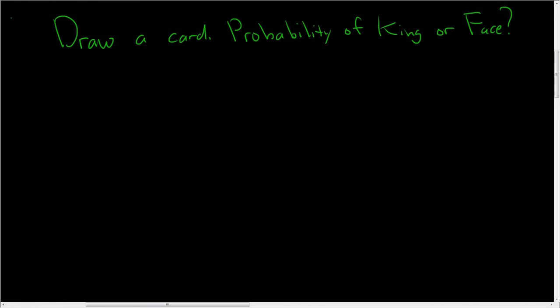Okay, so a single card will be selected from a deck, and we want the probability of selecting a king or a face card. So, solution.